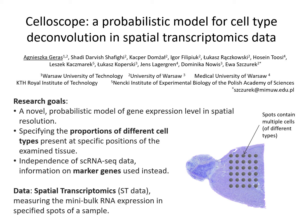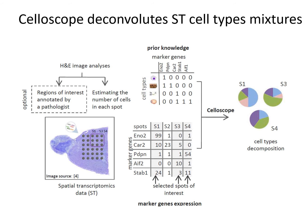Our main goal is to propose a novel model of gene expression level and a statistical method to infer its parameters — most importantly, proportions of different cell types present in spots selected on the examined tissue. Unlike methods proposed so far, our approach is independent of single cell data. Instead, we use information about marker genes.